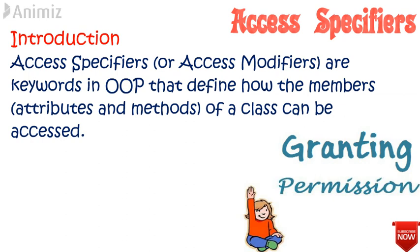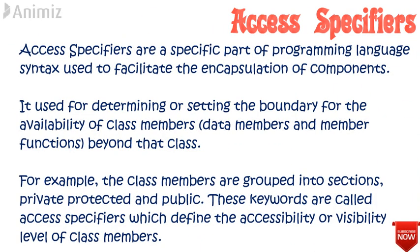Let us understand what are access specifiers. Access specifiers or access modifiers are the keywords in C++ which follow the concept of OOP — object oriented programming — that defines how the members, which includes data members and member functions, or attributes and methods of a class, can be accessed. This is just like granting permission for data members and member functions to be accessed from inside the class, outside the class, or from some other class. Access specifiers are a specific part of programming language used to facilitate the encapsulation of components. Encapsulation is combining data members and member functions into a single unit, which is called data encapsulation.